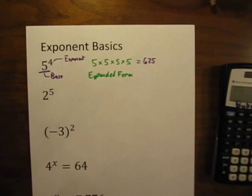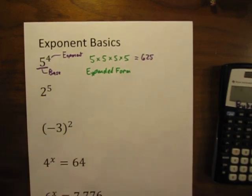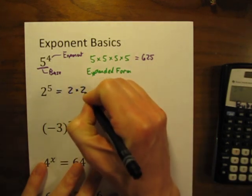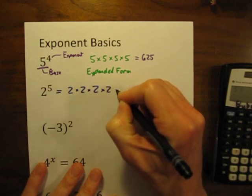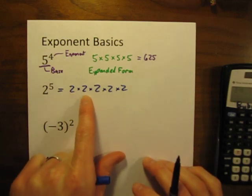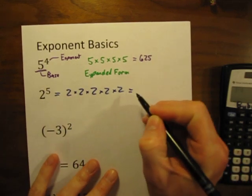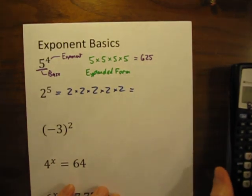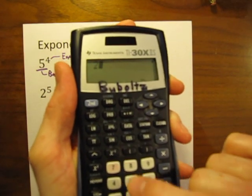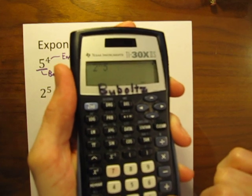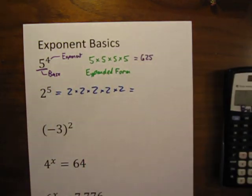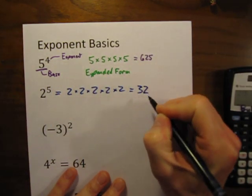Let's try a different one. If we have 2 to the 5th power and we're going to write that in expanded form, that would be equal to 2 times 2 times 2 times 2 times 2 — 2 multiplied by itself 5 times. I could punch that into my calculator, or use the shortcut: 2 raised to the 5th power equals 32.